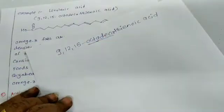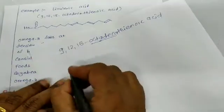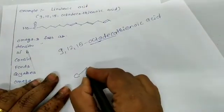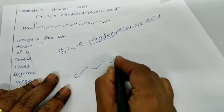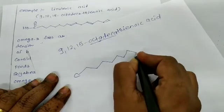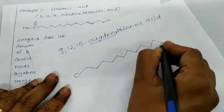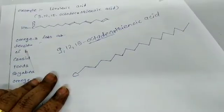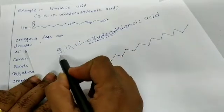Octadeca means 18. Total carbon atoms is 18. So counting: 1, 2, 3, 4, 5, 6, 7, 8, 9, 10, 11, 12, 13, 14, 15, 16, 17, 18. This is all 18 carbon atoms.